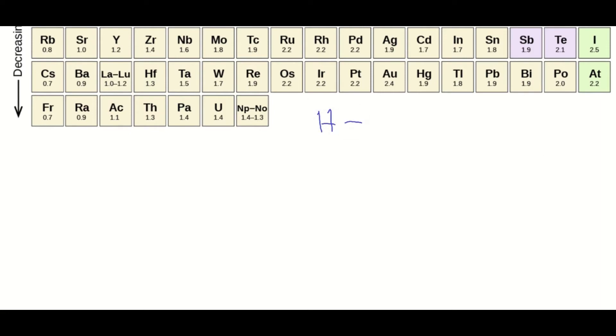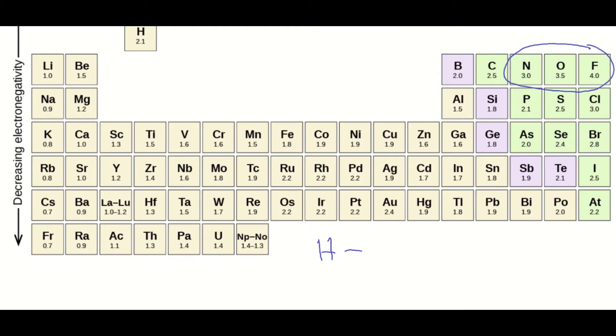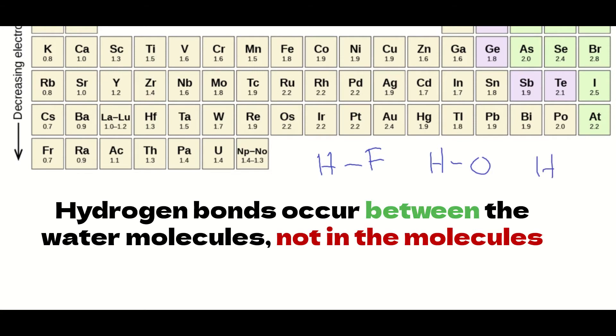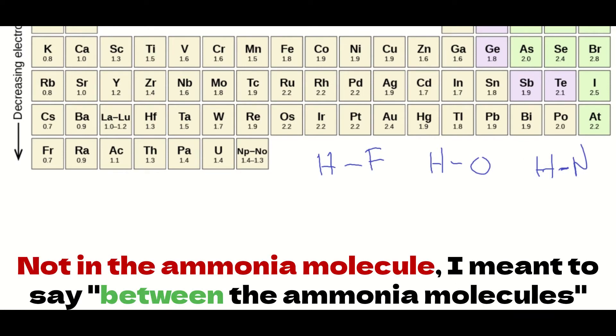Hydrogen bonding happens when you have molecules where you have a hydrogen bonded to a very electronegative element, one of these three. The fluorine being the most electronegative, and then hydrogen to oxygen, which is going to be the hydrogen bonds in the water molecule, and then hydrogen-nitrogen, which is going to make up the slightly weaker hydrogen bonding in the ammonia molecule.